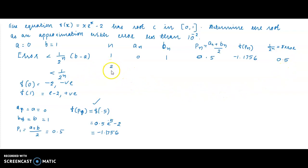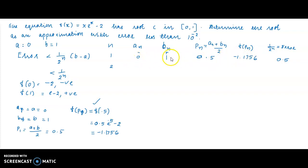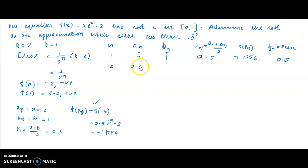Now n = 2. Since f(0) is negative, f(0.5) is negative, and f(1) is positive, the sign of Pₙ = 0.5 is negative. Because opposite signs are between 0.5 and 1, the new left endpoint a₂ = P₁ = 0.5, and b₂ = 1.